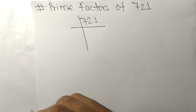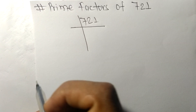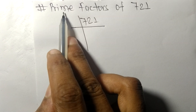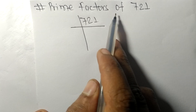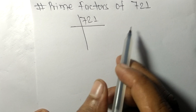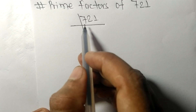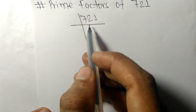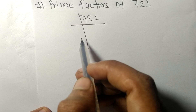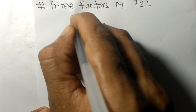Today in this video we shall learn to find the prime factors of 721. So 721 is exactly divisible...